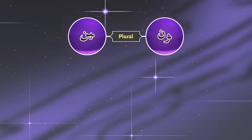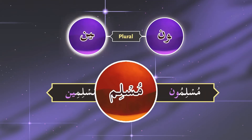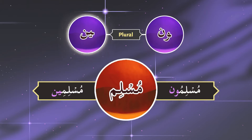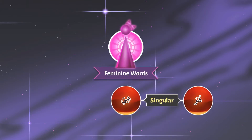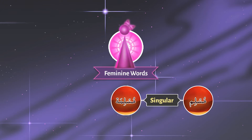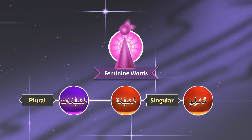We have also learned how to make plurals — for example, the plural of Muslim is مسلمون، مسلمين، and so on. We have also learned feminine words like هي، ربها، and مسلمة. And the plural of Muslimah is Muslimat.